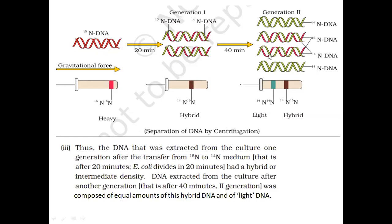Taking the next generation, we can see a hybrid band and a newly formed band. After another generation, we get eight strands — four DNA molecules. We can see the parental strand is retained. The band pattern allows us to conclude that the DNA's mode of replication is semi-conservative, because the parental strand continues to appear as a hybrid band while new strands are also being formed.